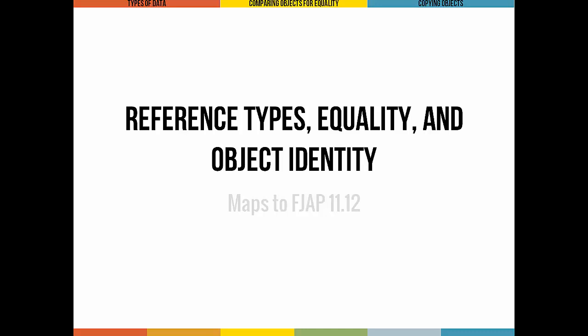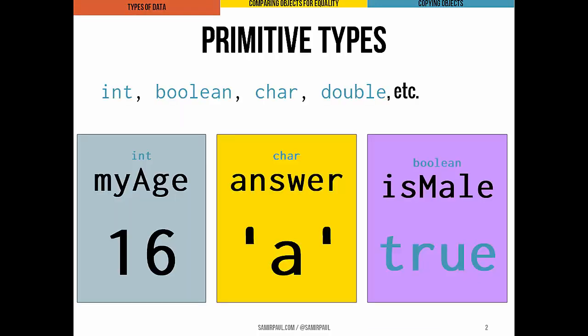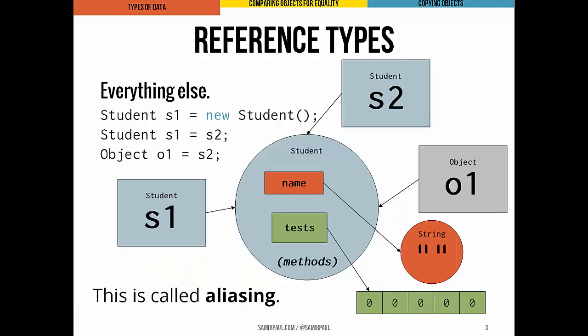Earlier in the course we drew the distinction between primitive data types — which include ints, characters, doubles, and booleans — and variables of reference types, which contain references or pointers to objects, but never the objects themselves.